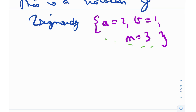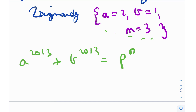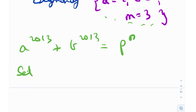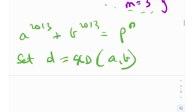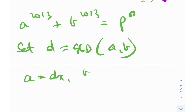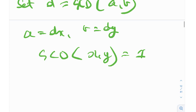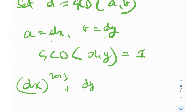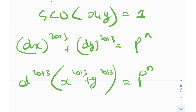Now let's come back to the problem. We have a^2013 + b^2013 = p^n. I'll set d = gcd(a, b), so a = dx and b = dy, where gcd(x, y) = 1. Substituting into the original equation: (dx)^2013 + (dy)^2013 = p^n, which gives d^2013 · (x^2013 + y^2013) = p^n. Since the right-hand side is a power of the prime p, d must be a power of p, so d = p^r for some r ≤ n.